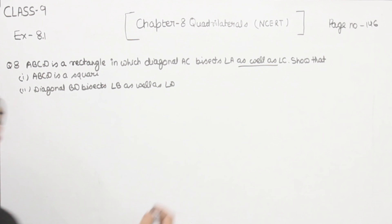Now we are going to solve part 2. BC is equal to CD. Since BC is equal to CD, angle number 5 is equal to angle number 6 — because angles opposite to equal sides are equal.